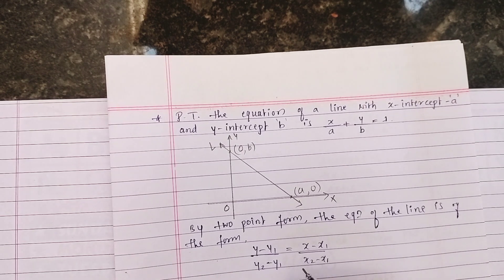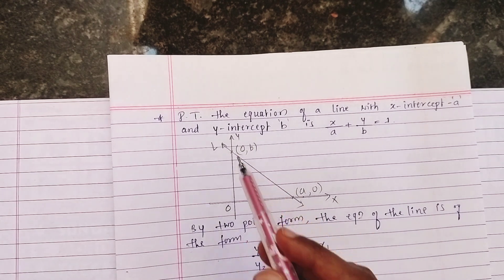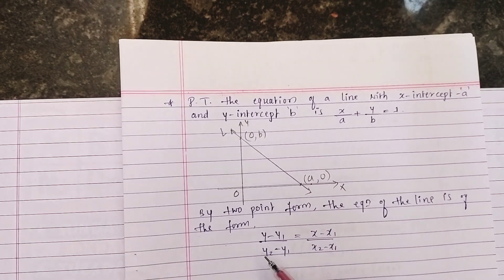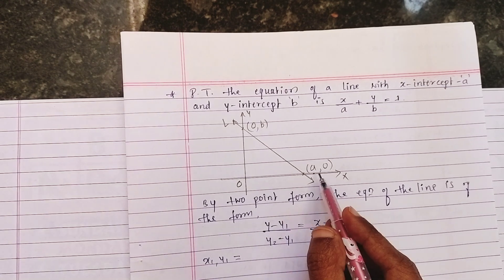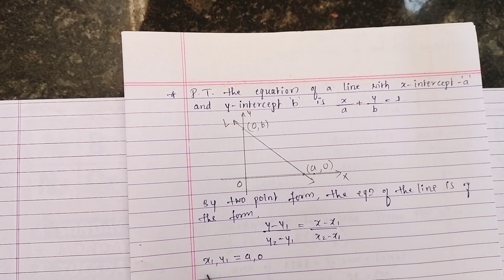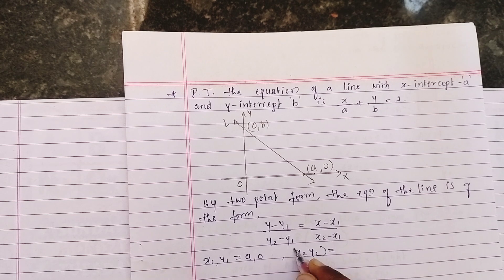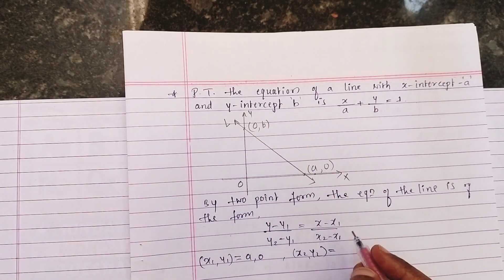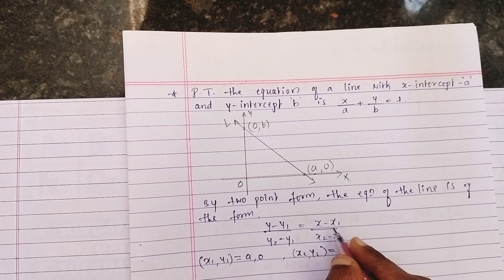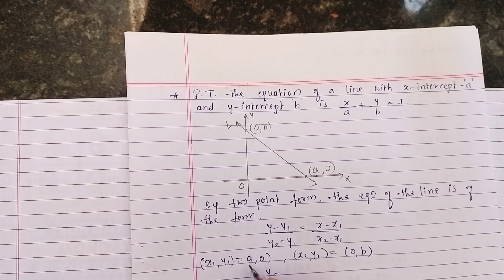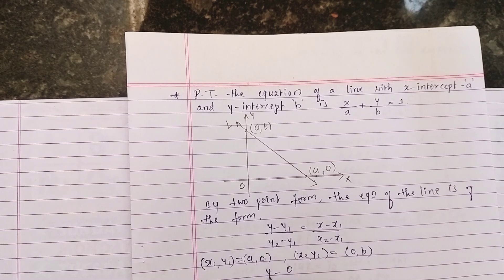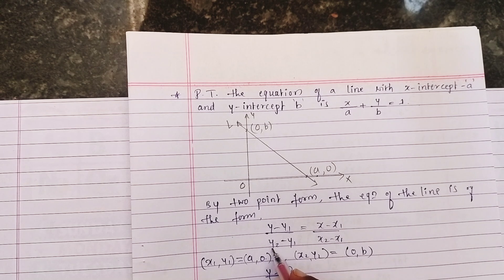We will substitute the values: x1 = a, y1 = 0 (the first point), and x2 = 0, y2 = b (the second point). Substituting into the equation: (y - 0) / (b - 0) = (x - a) / (0 - a).